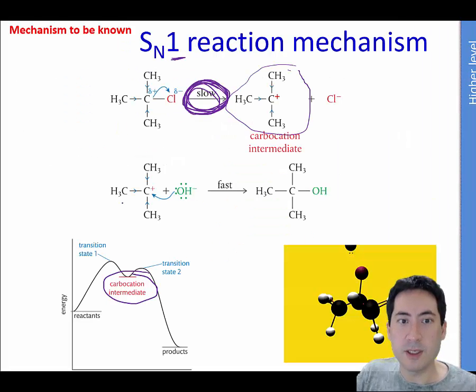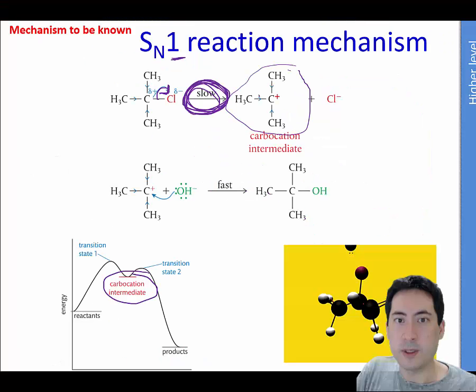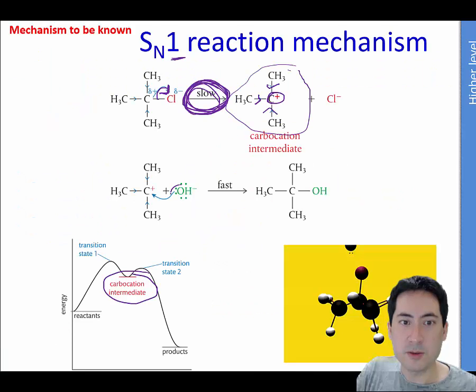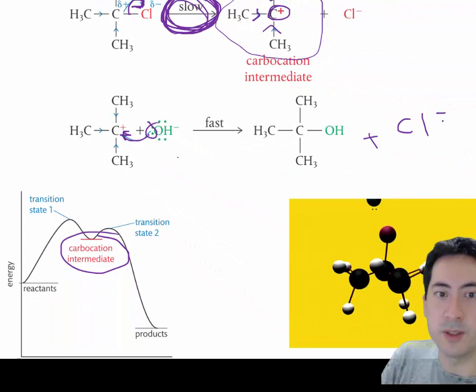Let's go back to this SN1 reaction. You will have this carbocation forming. You need to make sure you've done this double arrow. That's key. Definitely the positive needs to be there. You then must draw these electrons here attacking the carbocation. I would play it safe and at the very end still show the chlorine product coming off as well.